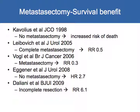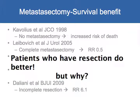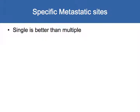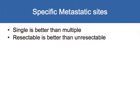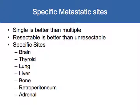A number of retrospective studies have looked at outcomes of patients who underwent metastasectomy. Basically, patients who have resection do better — the question is why. Looking at specific metastatic sites: single sites do better than multiple, and resectable is better than unresectable. Common sites kidney cancer spreads to that have been studied include brain, thyroid, lung, liver, bone, retroperitoneum, and adrenal.